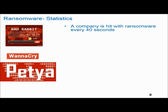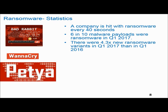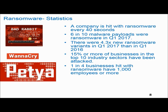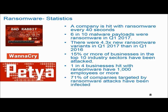Some alarming ransomware statistics: a company is hit with ransomware every 40 seconds; 6 in 10 malware payloads were ransomware in Q1 2017; there were 4.3 times more new ransomware variants in Q1 2017 than in Q1 2016; 15 percent or more of businesses in top industry sectors have been attacked; one in four businesses hit had 1,000 employees or more; and 71 percent of companies targeted by ransomware attacks have been infected. This information is sourced from the Barclays blog for further reading.